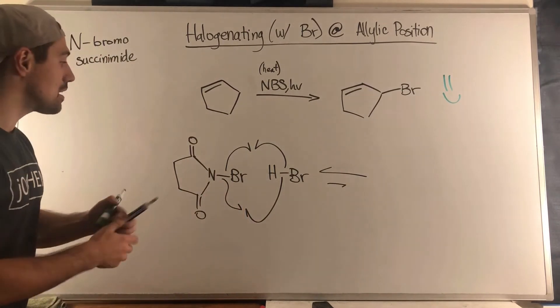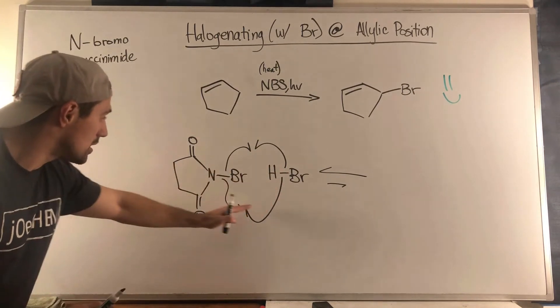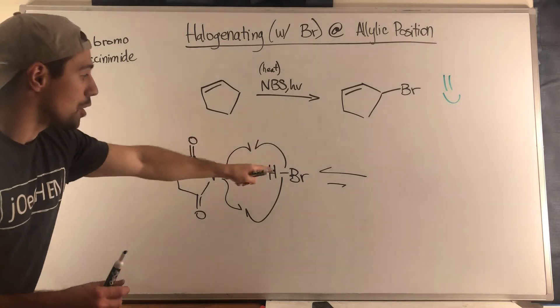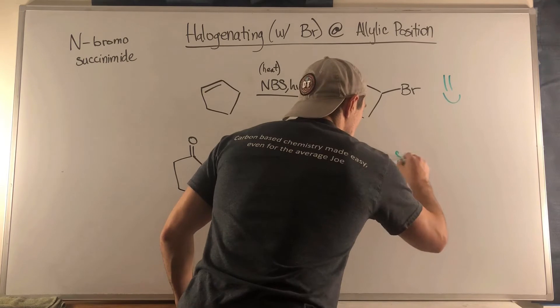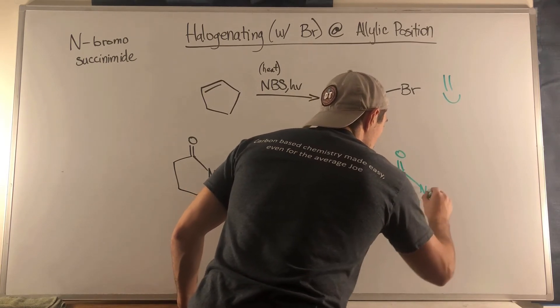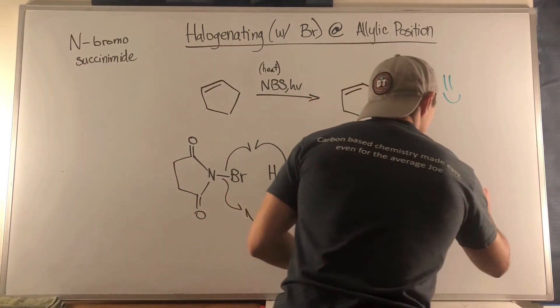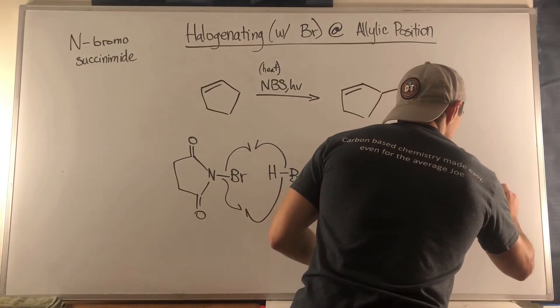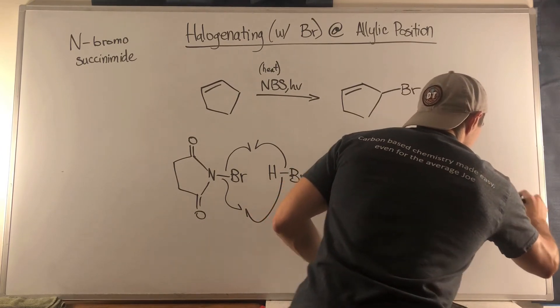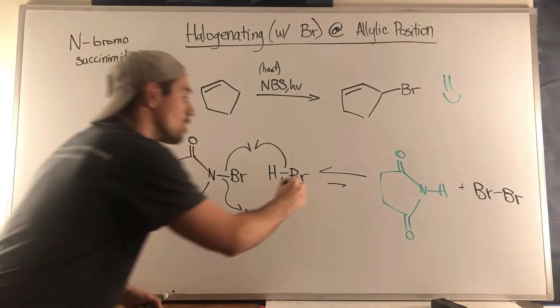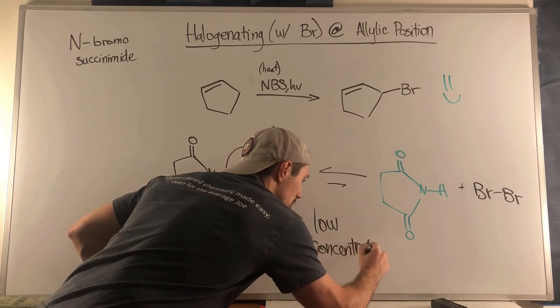I know these are crazy arrows happening, but basically we're having hydrogen taking one electron from this bond and going with nitrogen, bromine taking one electron going over with bromine. So all that's really happening here is we're swapping - the nitrogen is getting a hydrogen instead of a bromine, and then we make Br-Br, Br2. Once you've made this - again, this happens in low concentrations.